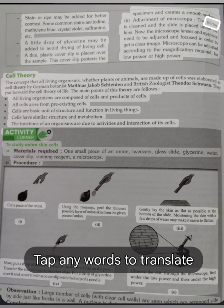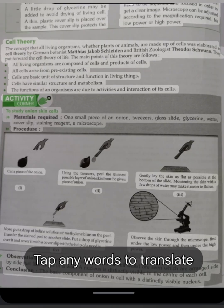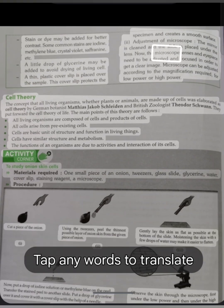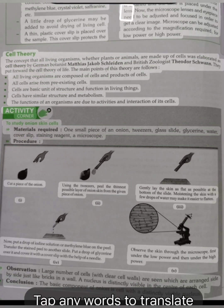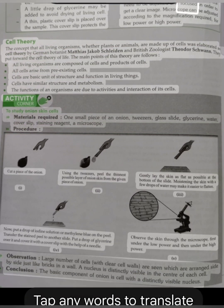II. Adjustment of microscope. The mirror is cleaned and the slide is placed under the lens. Now, the microscope lens and eyepiece lens need to be adjusted and focused in order to get a clear image. The microscope can be adjusted according to the magnification required, for low power or high power.